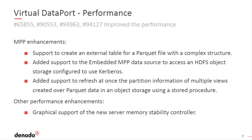This update adds several enhancements to the embedded MPP engine. For Parquet files, now it is possible to access the information stored with complex structures like columns of type map. The connection to a Kerberized HDFS is slightly different for embedded MPP data sources than for regular ones. Starting from this update, embedded MPP data sources that access an HDFS object storage can be configured to use Kerberos.